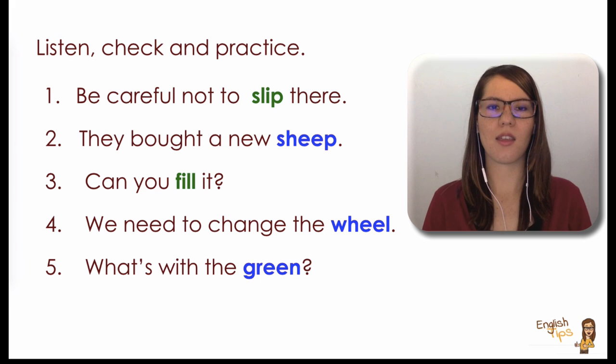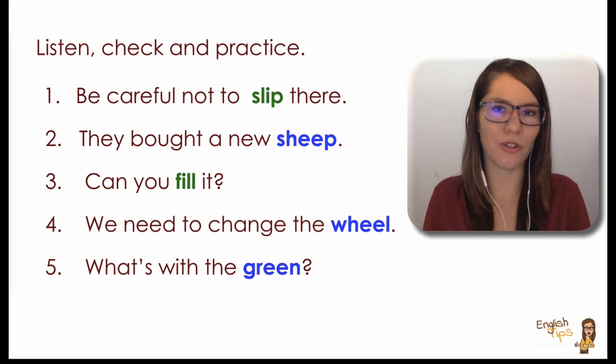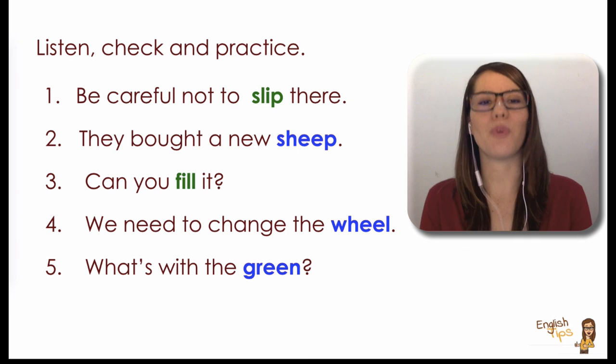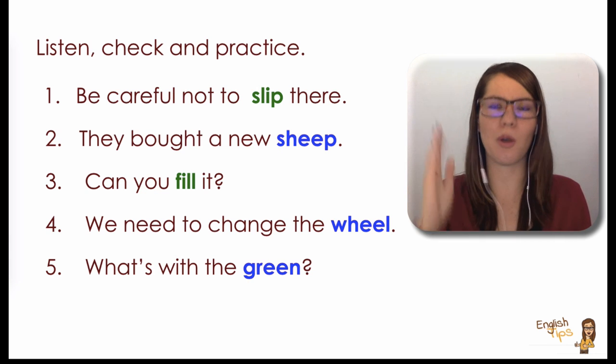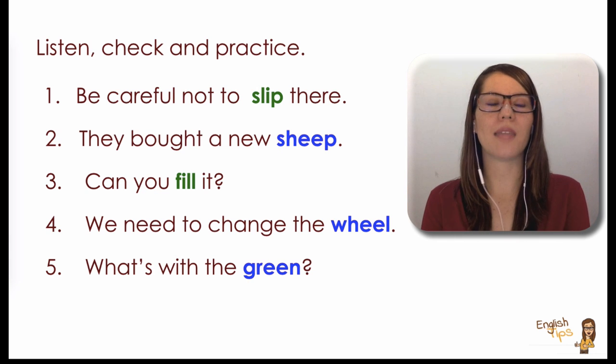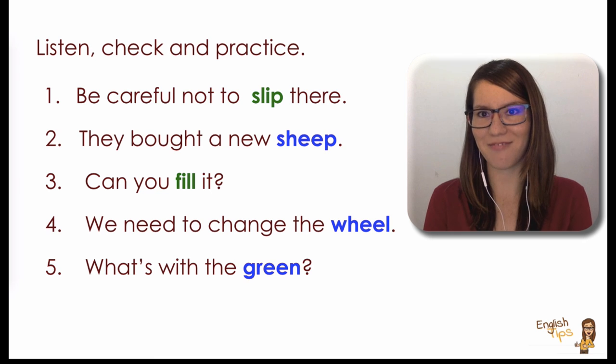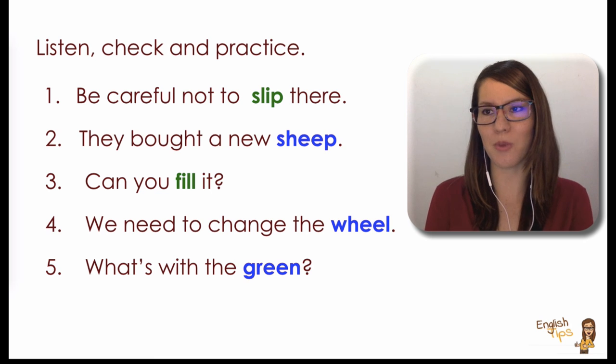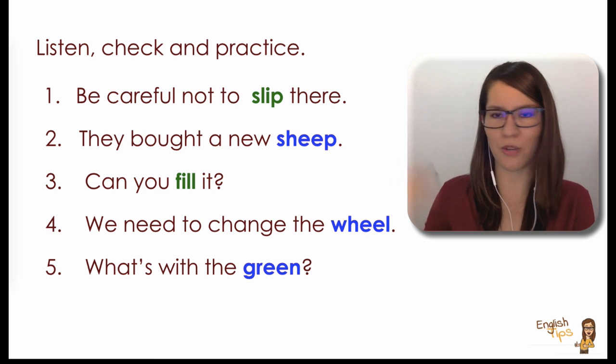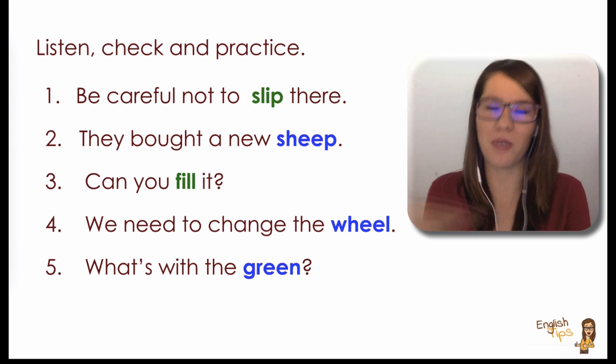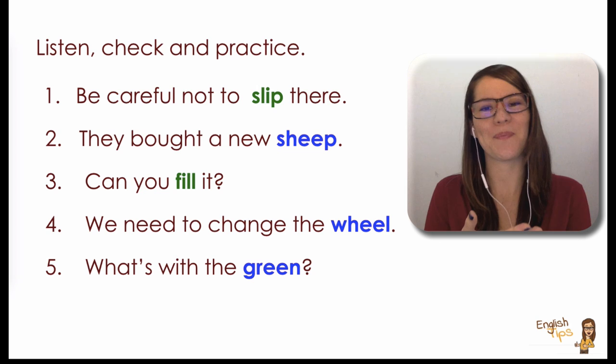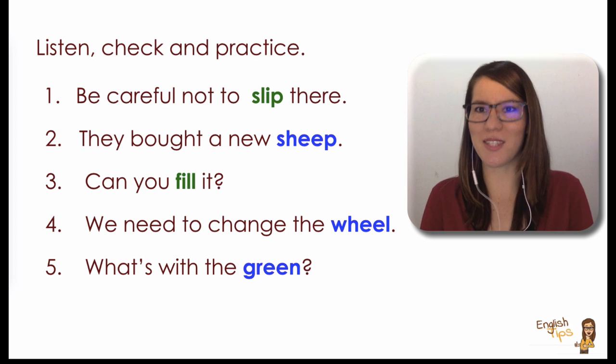Then number three: Can you fill it? Can you fill the bottle with water, for example? Number four: We need to change the wheel. Right, the round thing that helps your bicycle keep going. And number five: What's with the green? Imagine that your friend comes to a party and she's wearing all green, so you don't understand if this means something. You would ask this question. All right, and I hope that this was useful.